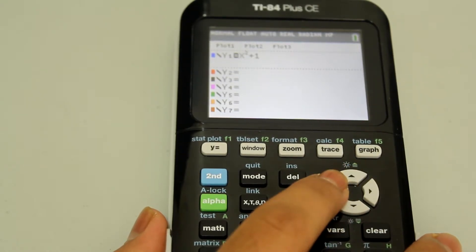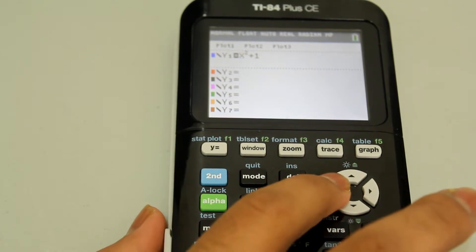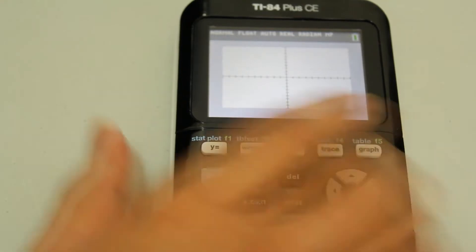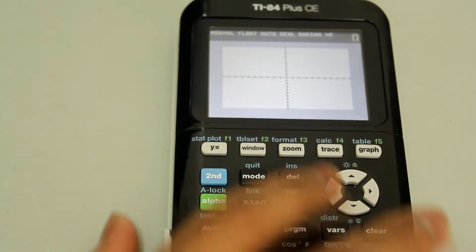what you can do is just move the cursor onto the equal sign and then hit enter. And then when you go to graph, you see that that graph does not show up again. But if you wanted to get that graph back, you can just go into the equal sign again, hit enter a second time and that graph will come back.